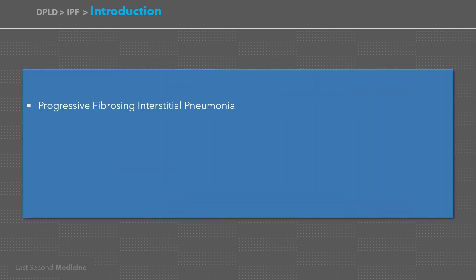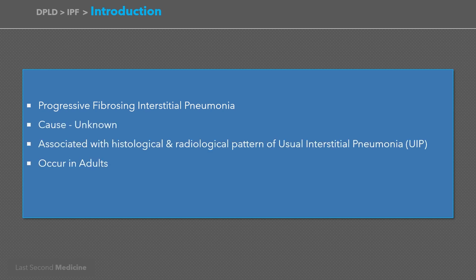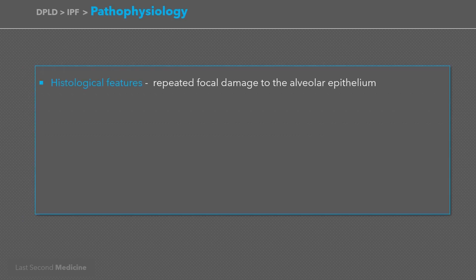Idiopathic pulmonary fibrosis is a progressive fibrosing interstitial pneumonia of unknown cause occurring mainly in adults, and is associated with the histological or radiological pattern of usual interstitial pneumonia. As the name indicates it is an idiopathic disease, but the histological features are suggestive of repeated episodes of focal damage to the alveolar epithelium, consistent with an autoimmune process. However, the etiology remains elusive.